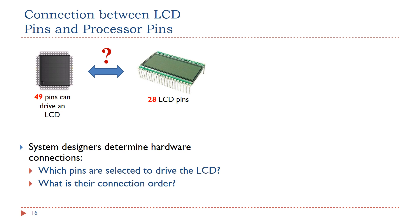The STM32L4 processor has 49 LCD pins with the alternate function of LCD, while the LCD glass has only 28 pins. Therefore, when we design a circuit board, we need to decide which processor pins should be used to drive the LCD. This decision should be made carefully based on the overall system needs, because a processor pin can only perform a limited number of predefined alternate functions. At the system design stage, we need to consider the overall pin assignment: how many serial ports, I2C ports, GPIO pins, timer outputs or inputs we need, and so on.